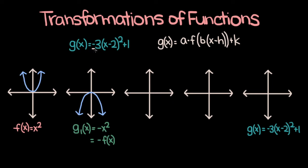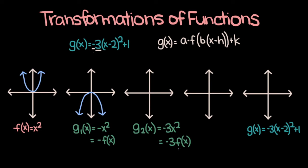Now let's add in this 3. We're integrating each of these individual transformations one by one. So now say we have a function g2 of x, which is equal to negative 3 x squared. G2 of x is nothing but negative 3 times f of x. This negative sign means that g2 of x is going to be f of x flipped over the x-axis — we've already accounted for that. But what does the 3 mean? Since we're multiplying f of x by some constant, it's going to be a vertical stretch or shrink. And since that constant has a magnitude greater than 1 — its magnitude is 3 — g2 of x is going to be f of x not only flipped over the x-axis, but also stretched in the vertical direction. So g2 of x is going to look something like this.